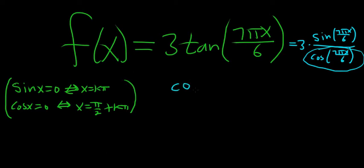So that means you would have cosine of 7 pi x over 6 equal to 0. Because you can't divide by 0, that's where it's not continuous. You can use this formula here. You see here's our x, except now this is our x here.